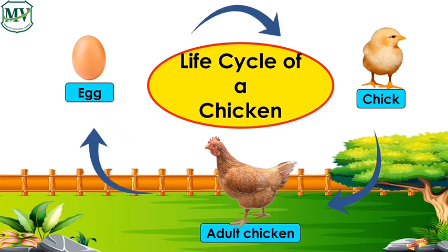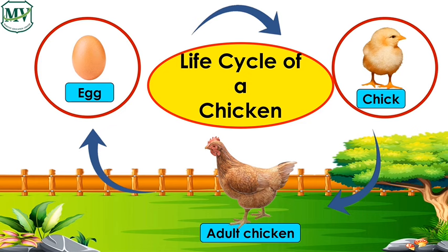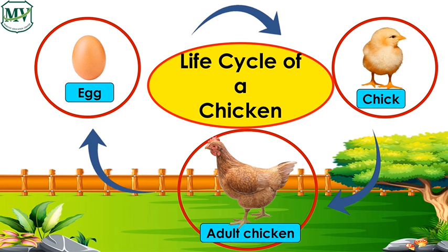This is the life cycle of a chicken. The life cycle of a chicken starts from an egg. A chick hatches from the egg. The chick then grows into an adult chicken. How many stages does it have in its life cycle? Let's count it.